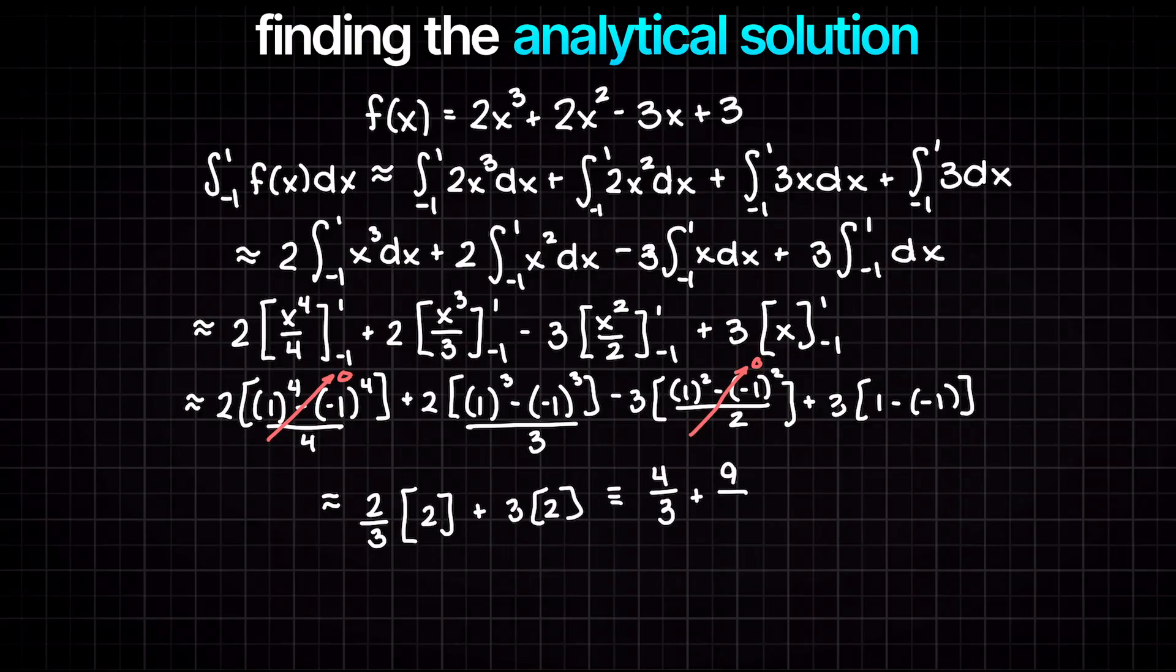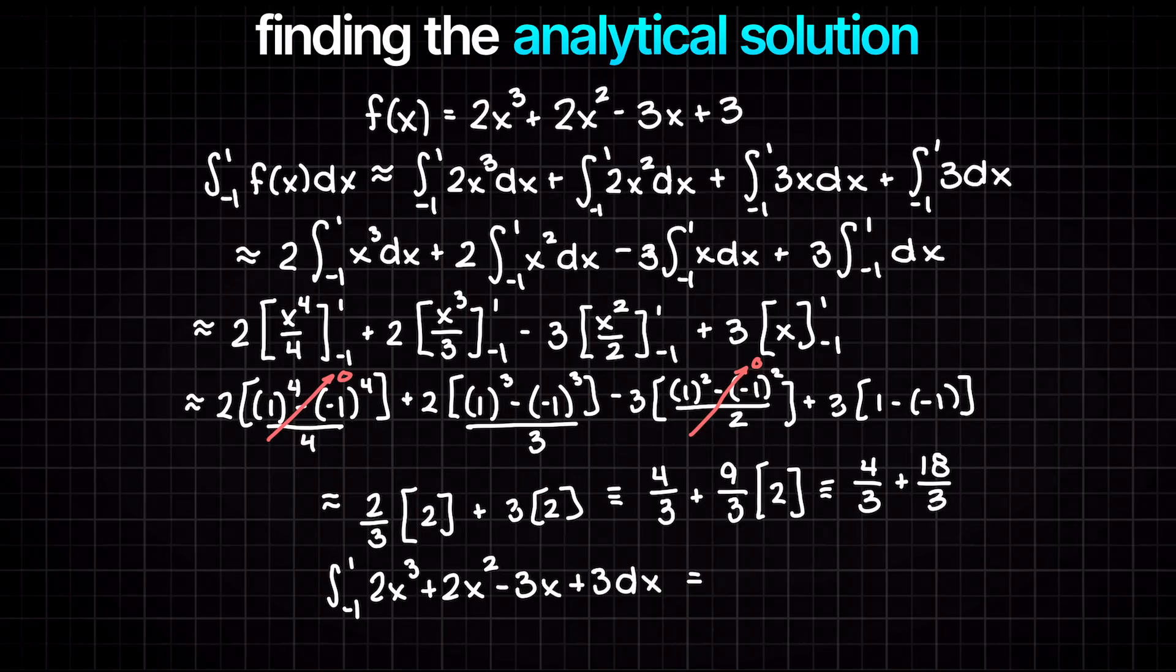We can then go ahead and solve the definite integrals, and this leaves us with 22 over 3, which is 7.33, the exact answer as earlier.